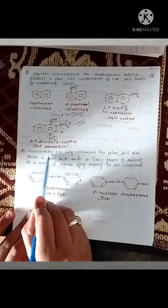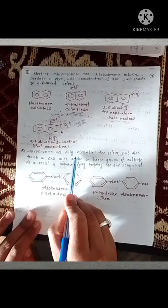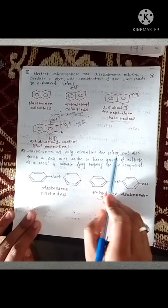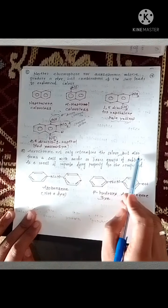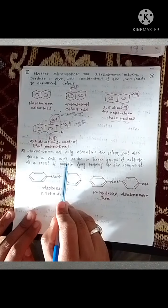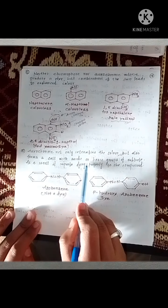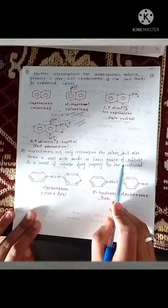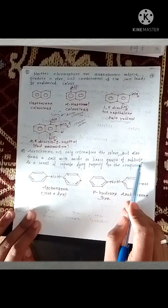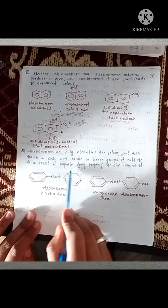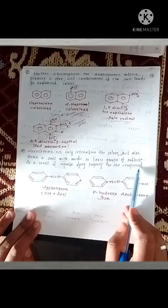Auxochromes not only intensify the color but also form a salt with the acidic or basic group of the substrate. As a result, they impart dyeing property to the compound.